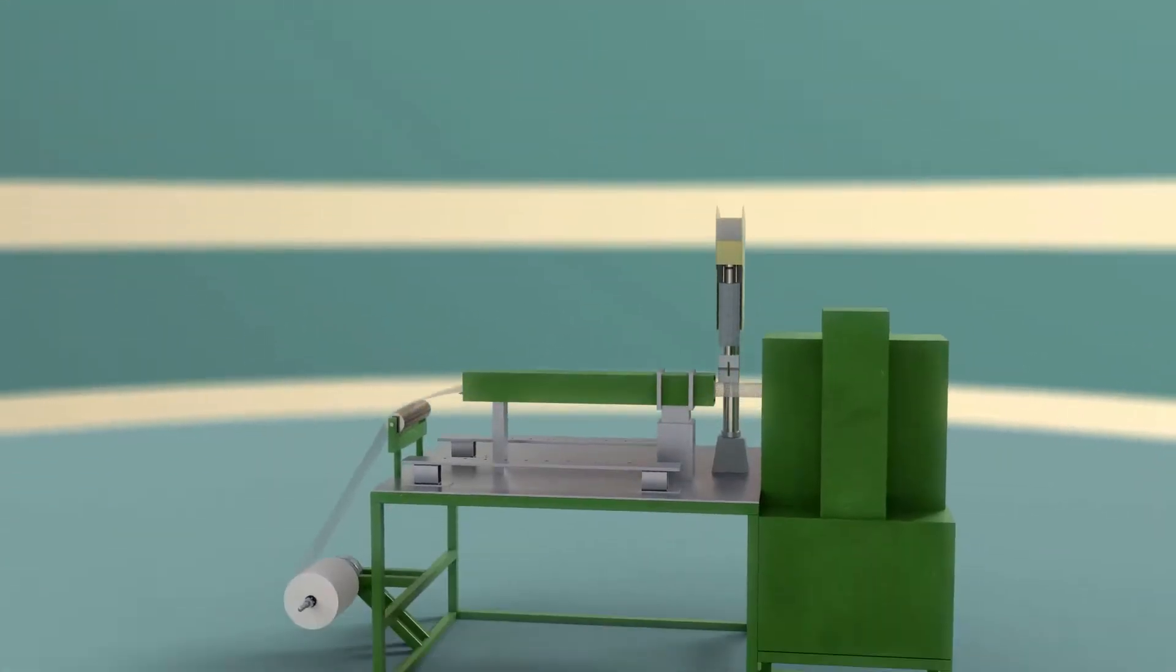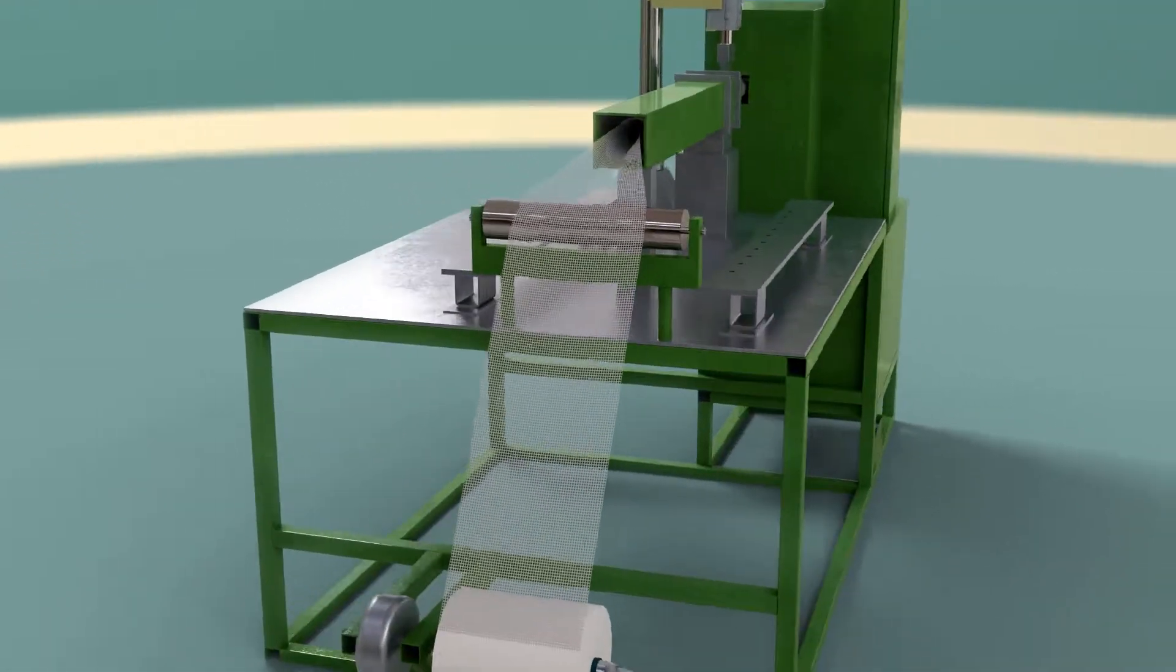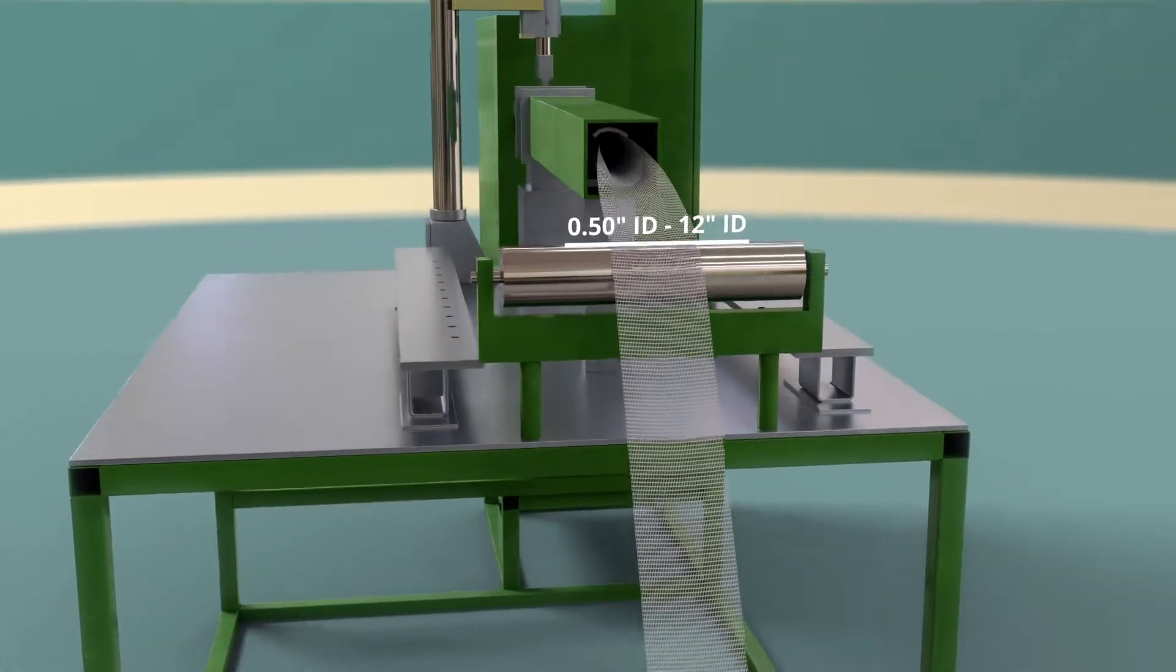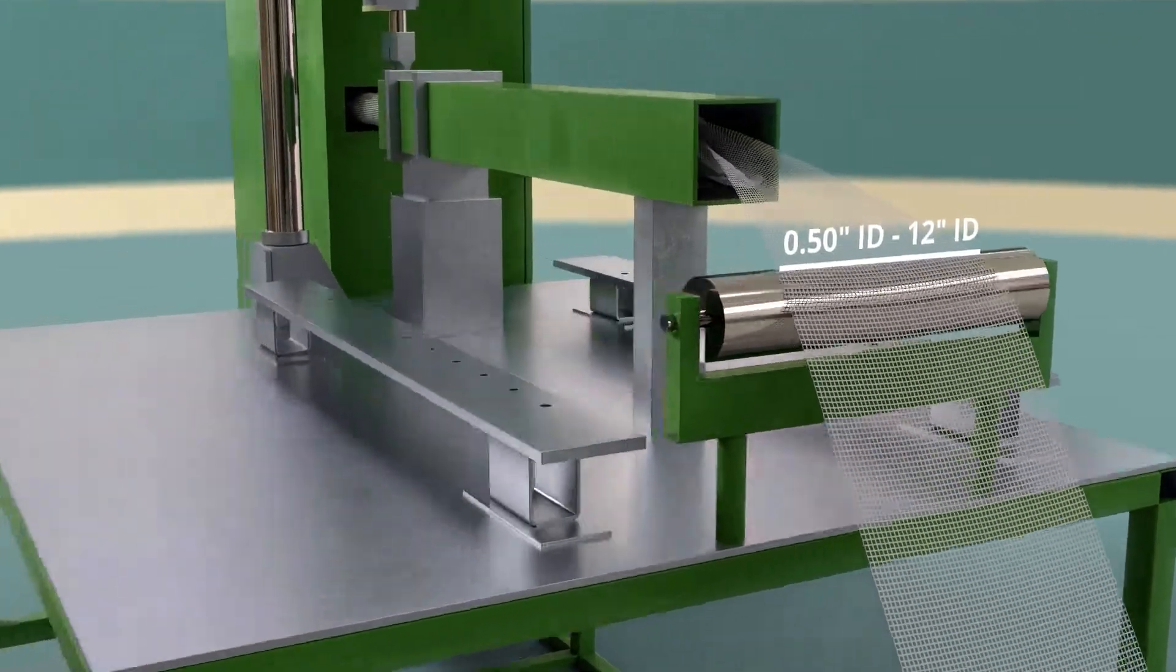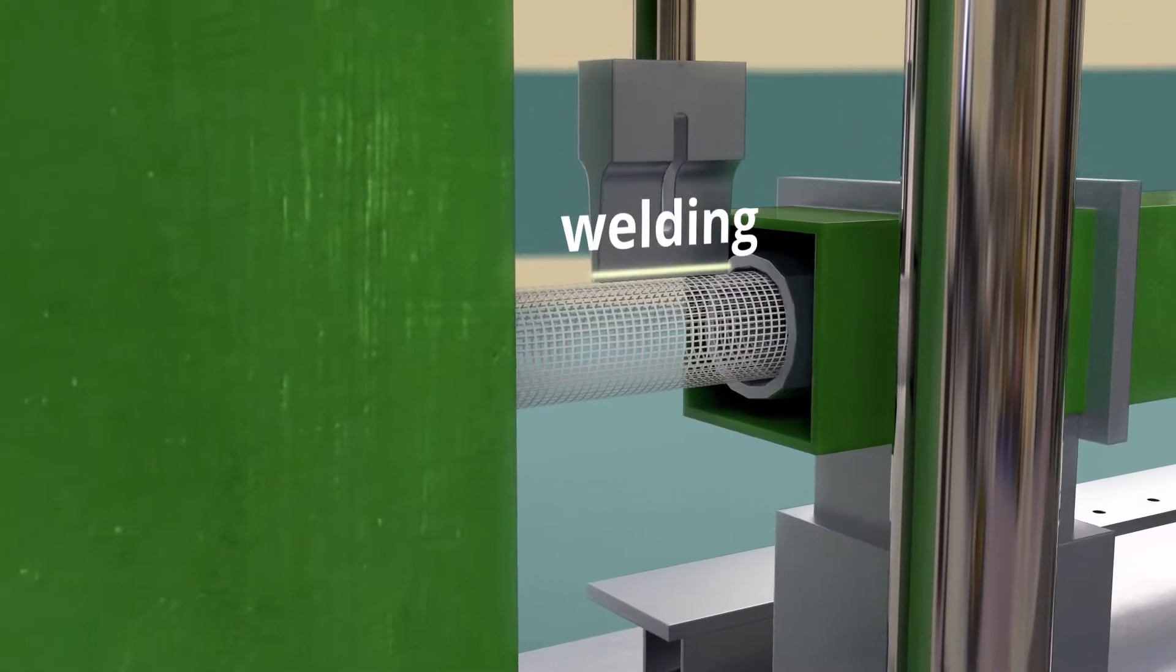Sonic Welding: Our proprietary method of sonic welding uses square mesh products to produce custom tubes ranging from 50 hundredths of an inch ID up to 12 inches ID. These products are welded to form a tubular shape and then custom cut to meet your final length requirements.